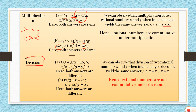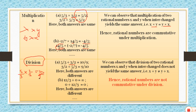Now let's see whether commutative property works for division. Dividing 5 by 3 by 3 by 2: we change division to multiplication and take the reciprocal. The answer is 10 by 9. Now swapping positions — 3 by 2 divided by 5 by 3 — the reciprocal of 5 by 3 becomes 3 by 5, so the answer is 9 by 10. Both answers are different.